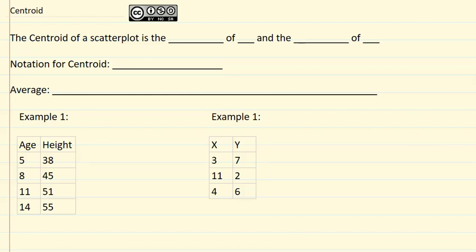Now that we've taken a look at a scatterplot, we're going to talk about an important point on the scatterplot called the centroid. The centroid is not actually one of the points from the data values in the scatterplot.